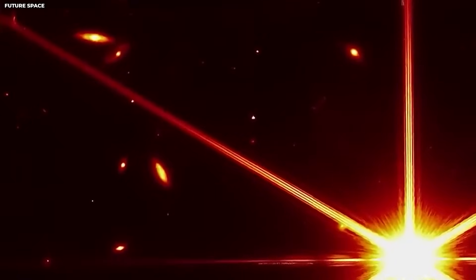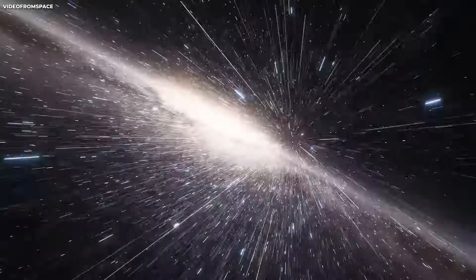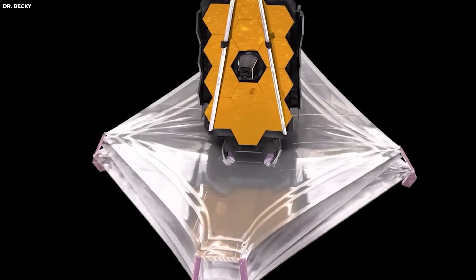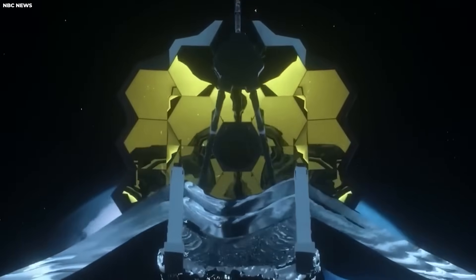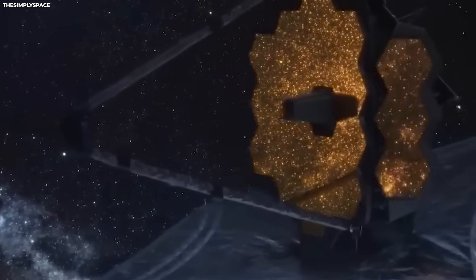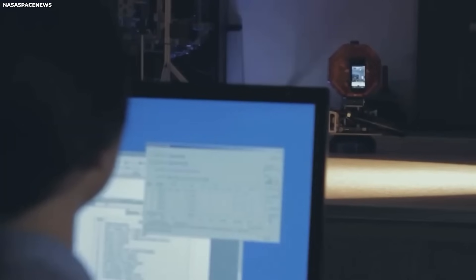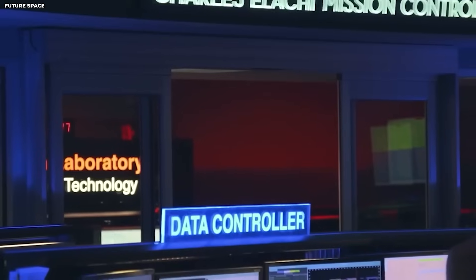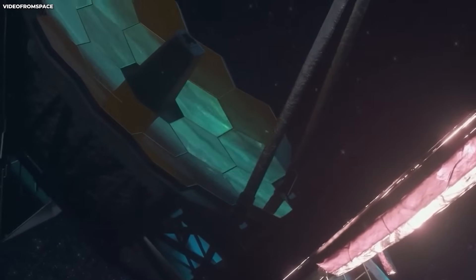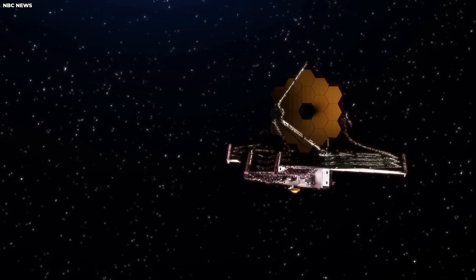Even a small mistake in this process could have jeopardized the substantial investment of over 10 billion dollars. Additionally, accurate pointing and tracking systems were crucial to ensure that the telescope could accurately point at and track objects in space. This process, known as commissioning, involved observing calibration targets and fine-tuning the telescope's systems. The fact that the JWST passed all these tests flawlessly was truly remarkable, making it a truly global endeavor.